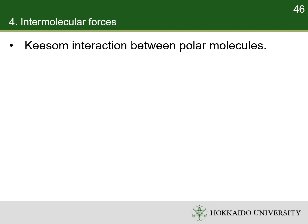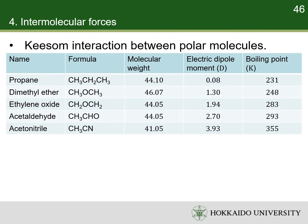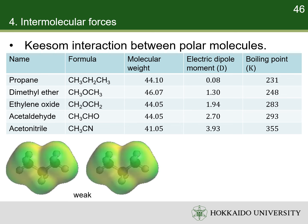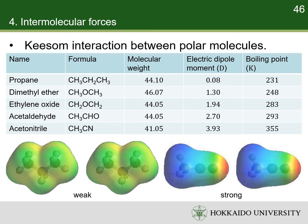Keesom interaction is the main attraction between polar molecules if hydrogen bonding is absent. For example, propane, dimethyl ether, ethylene oxide, acetaldehyde, and acetonitrile are organic molecules of similar weights and sizes. Propane is non-polar with a very small electric dipole moment, so its Keesom interaction is very weak. On the other hand, acetonitrile has a big electric dipole moment, so its Keesom interaction is strong. As a result of Keesom interaction, more energy is required to separate molecules with bigger electric dipole moments, leading to higher boiling points.